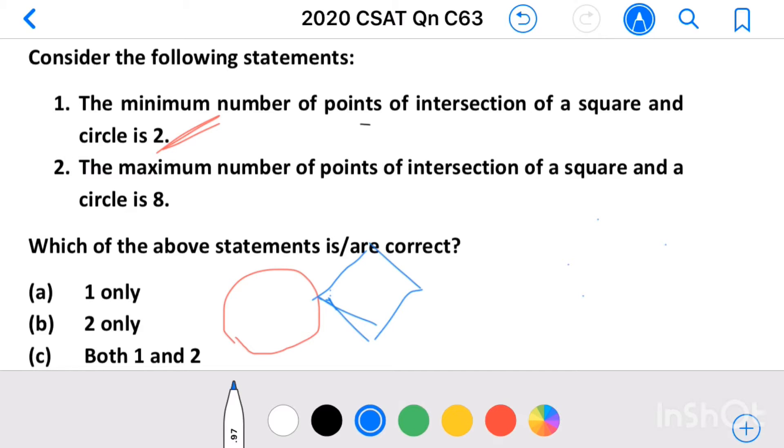One point of intersection is also possible, so this statement is wrong.